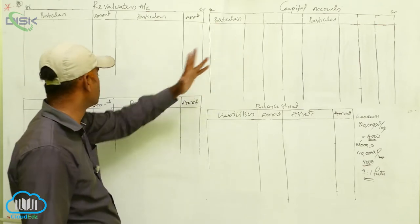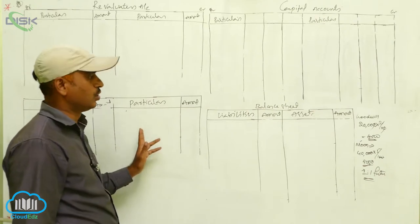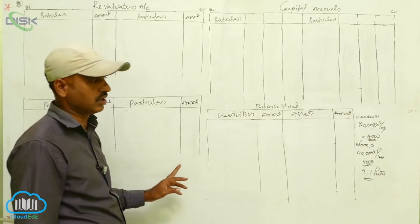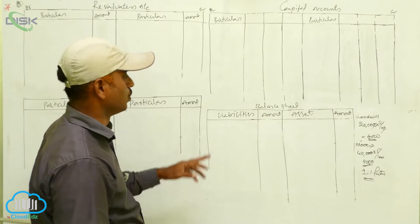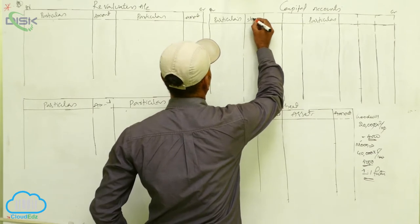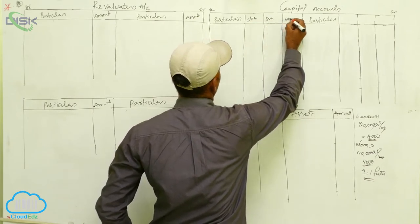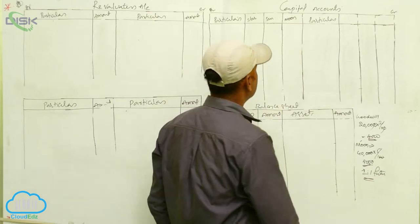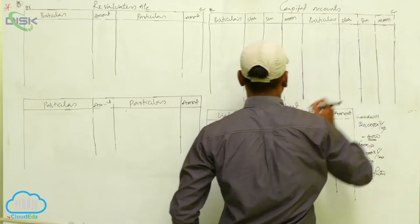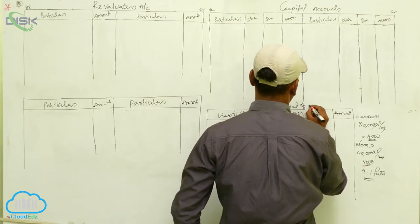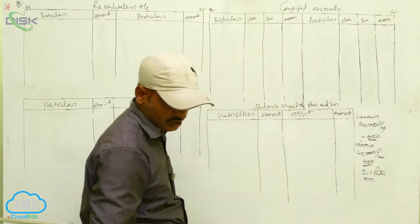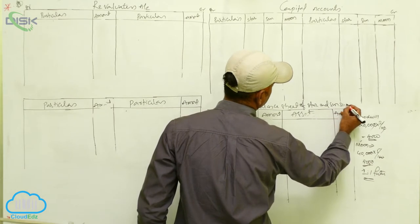The necessary ledger accounts to prepare are: the revaluation account, capital accounts, Moon's loan account, and the balance sheet. We need not prepare a goodwill account since goodwill is adjusted without raising it. The balance sheet is for the new firm of Star and Sun as on 31st March 2015.